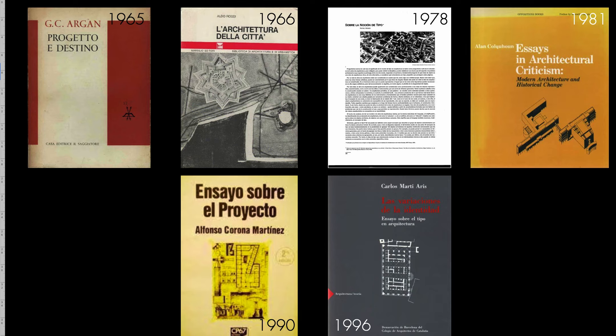The concept of type was first discussed in the 20th century — as far as we know — in that period. After that, it appeared in the context of the city in the famous book by Aldo Rossi, The Architecture of the City. Later, Rafael Moneo, another important European architect who taught in Harvard, Barcelona, and Madrid, wrote a lengthy article on it. Alan Colquhoun also dedicated some time to it.